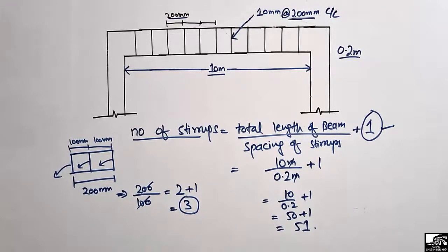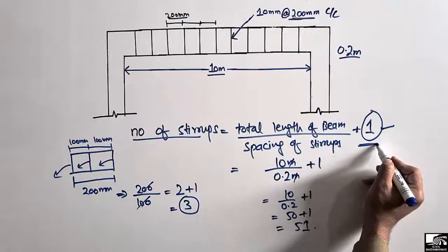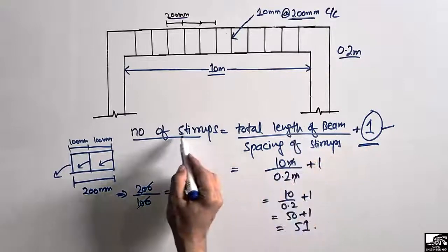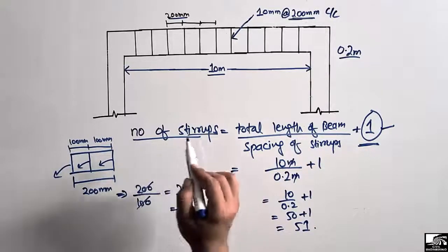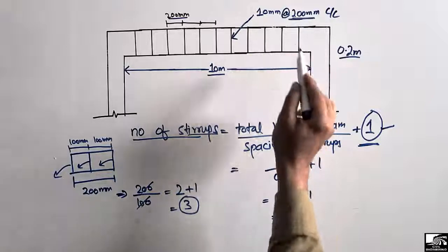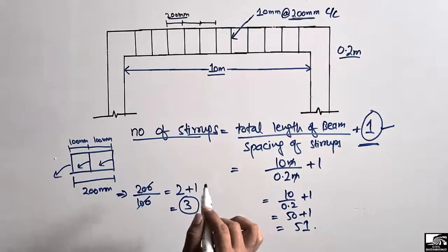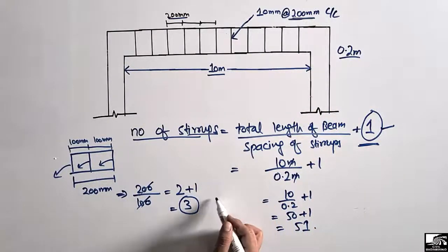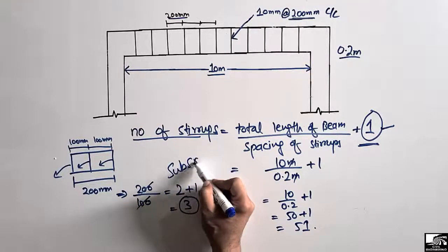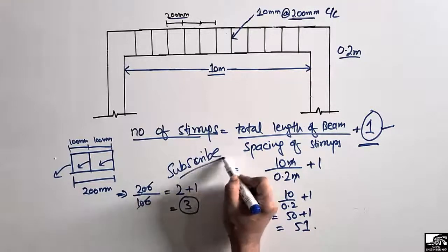It should always be kept in mind that 1 should always be added to this formula in order to find out the total number of stirrups, because we always ignore the last stirrup in the beam. Hope you guys understand how to find out the number of stirrups in a beam. Don't forget to subscribe to our channel. Thank you for watching.